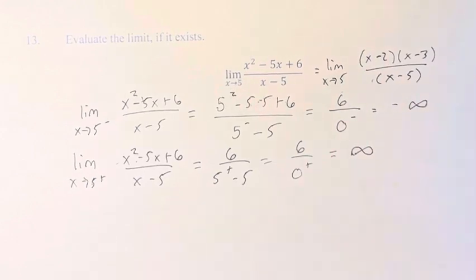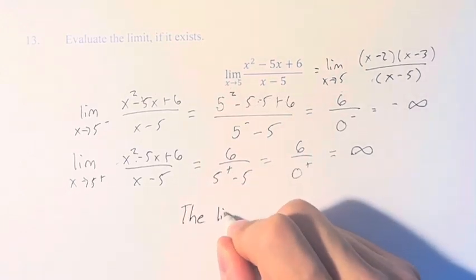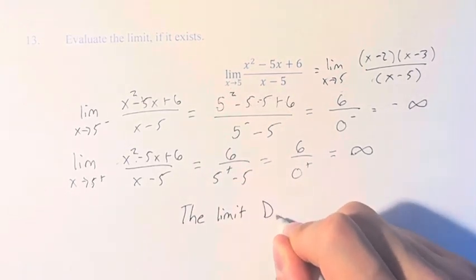And we can say that since the limit from the right and the left do not equal each other because negative infinity does not equal infinity, the limit DNE does not exist.